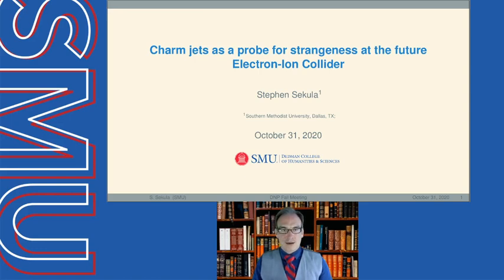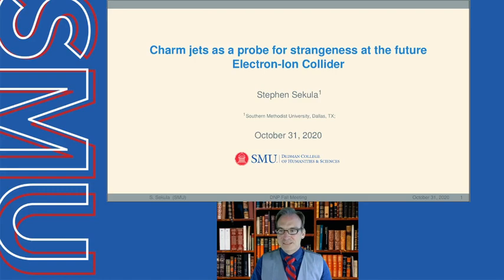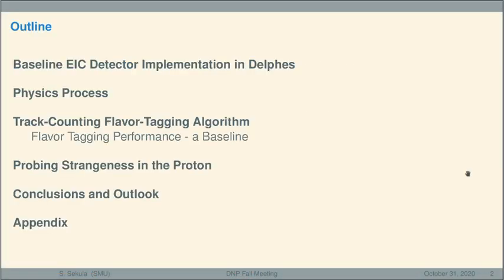So in this talk, I will talk a little bit about charm jets as a probe for strangeness of the future electron ion collider. And as I like to begin all my talks, I'd like to thank the organizers for this opportunity, which I squandered, to talk a little bit more about some recent work that my colleagues and I have been doing looking at this very subject. So with that in mind, let's go ahead and move to the outline.